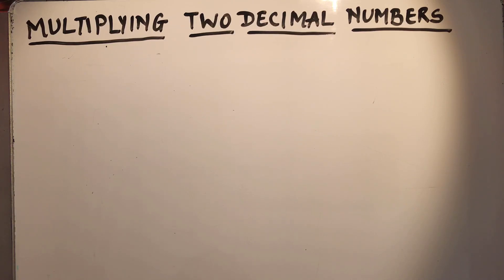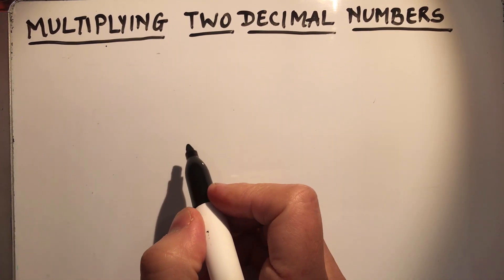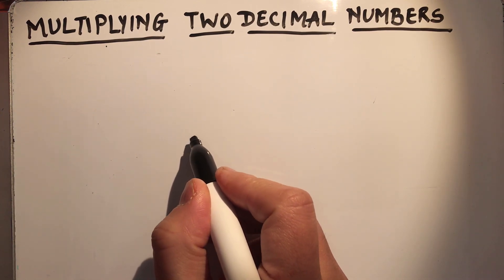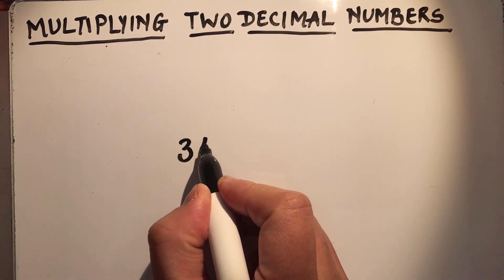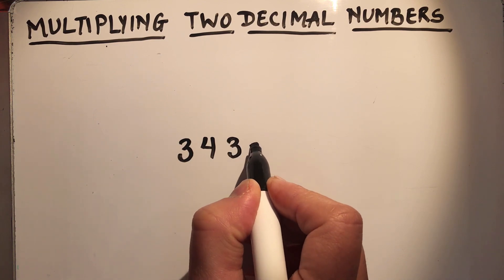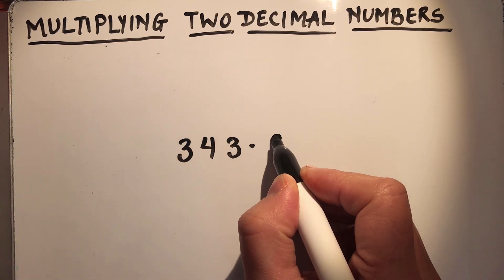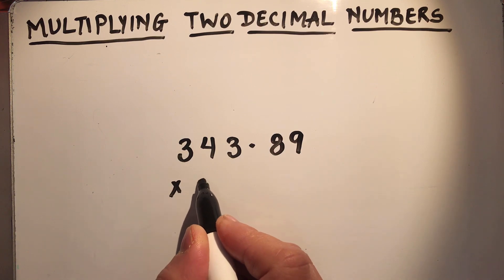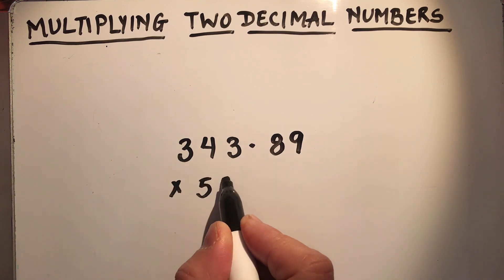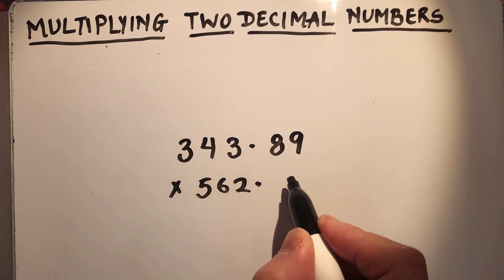Hello viewers, today we are going to learn how to multiply two decimal numbers. We are going to take a three-digit decimal number up to two decimal places. Let's get started. Suppose our first number is 343.89 and the other number is 562.34.